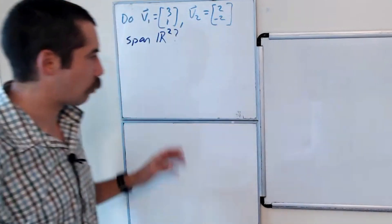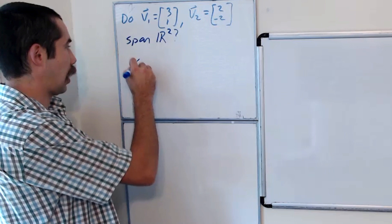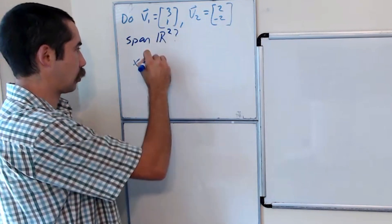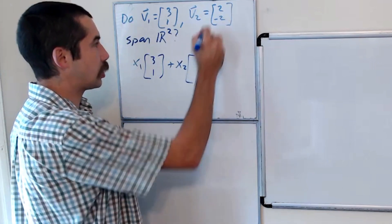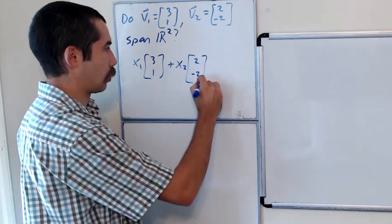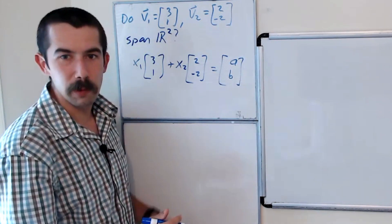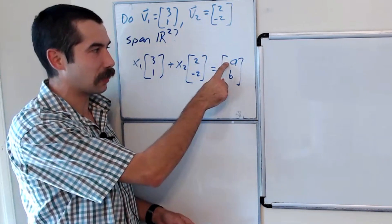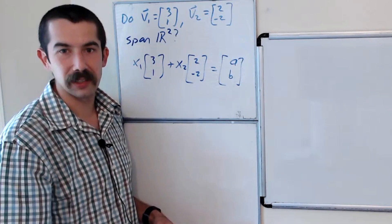Well, to answer this question, what we want to do is solve the vector equation x1v1 plus x2v2 equals some arbitrary vector in R2. So we want to show no matter what we plug in for a and b, we can solve this vector equation.